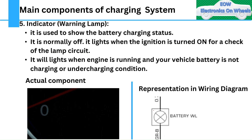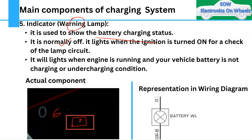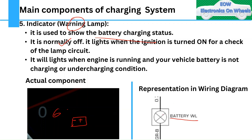The fifth component is the indicator or warning lamp. This lamp shows the battery charging status on the instrument cluster. It is normally off, but lights up when the ignition is turned on as a self-test check of the lamp circuit. It also lights when the engine is running and the battery is not charging or is in an undercharging condition. On the cluster it appears as a battery symbol telltale, and the actual component is an LED on the instrument cluster.